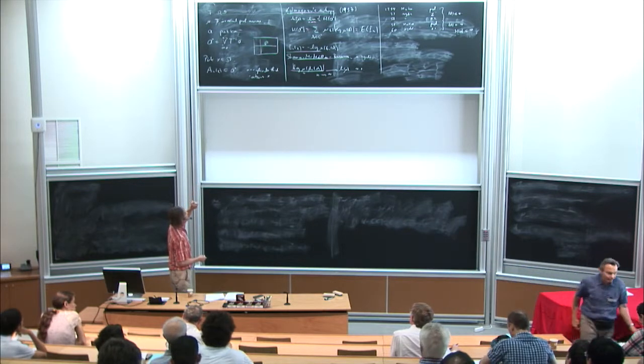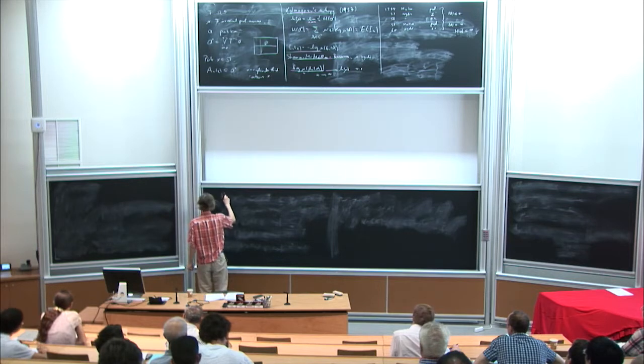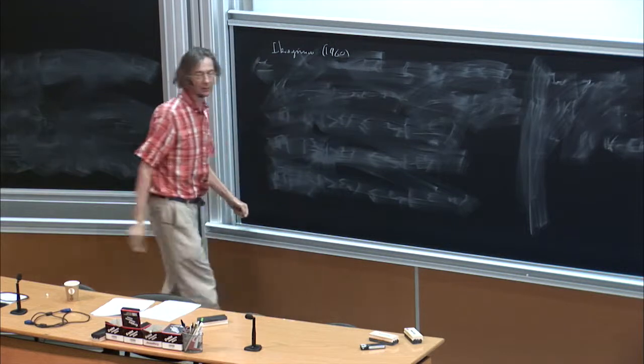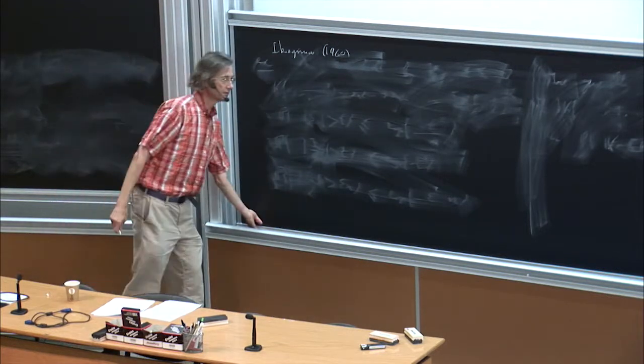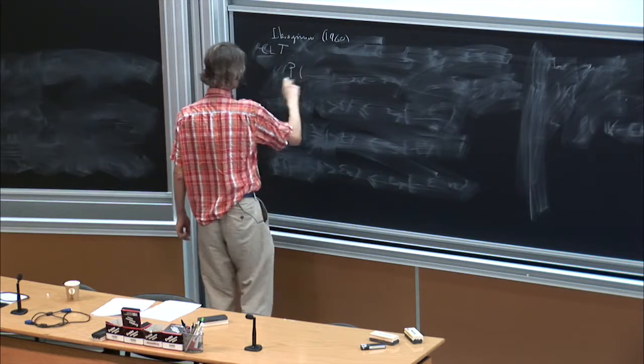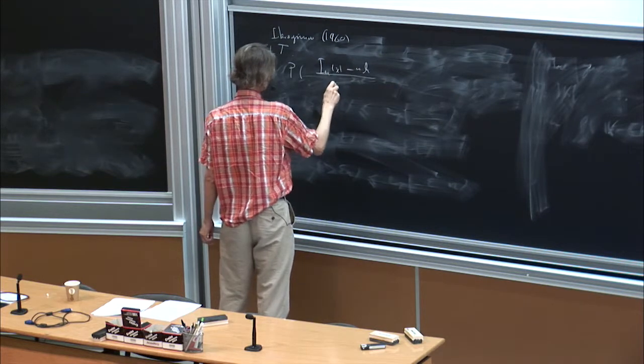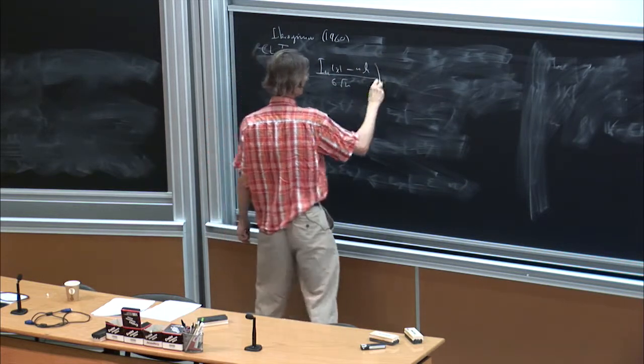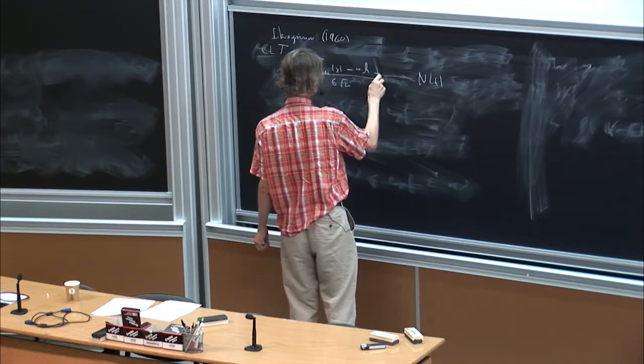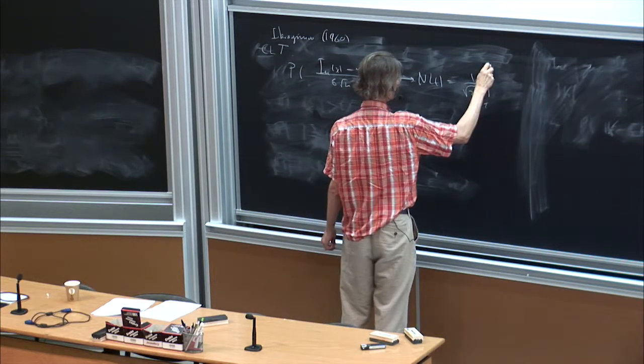Well, we want to look a little bit more closely at this convergence properties and then the next progress was made by Ibragimov in 1960, who showed that there is a central limit theorem for this. Namely the probability of I_n of x - you subtract this over sigma root n - converges to the normal distribution. This bigger equal and some t converges to normal distribution which is the ordinary what we think it is.